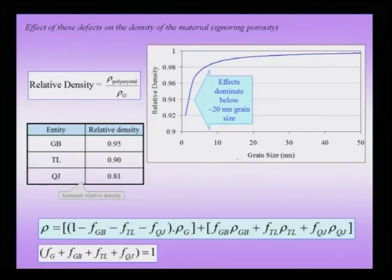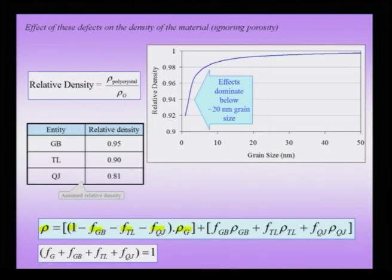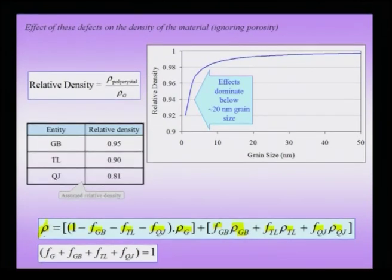What effect does this have on the density of the material? We already noted that the coordination number is smaller in the grain boundary or the higher order entities compared to the bulk. Therefore, this is going to affect density, and as expected this effect is going to be prominent at about 10 nanometers or of that order. The density of the material can be written as rho = (1 - f_GB - f_TL - f_QJ) × rho_grain, plus contributions from the relative densities of grain boundary, triple line, and quadruple junction, to get the overall density of the nano crystal.